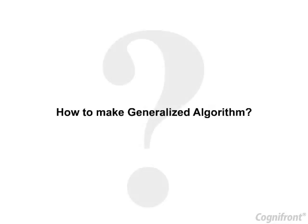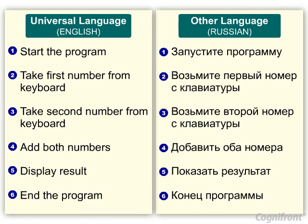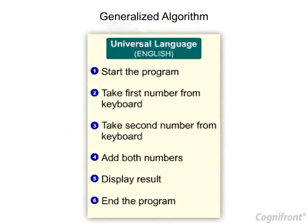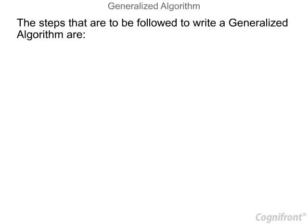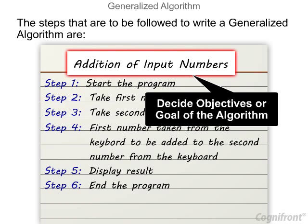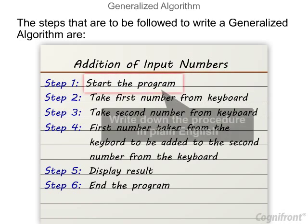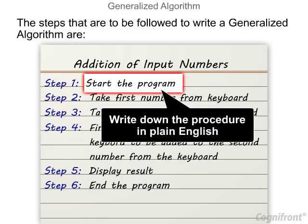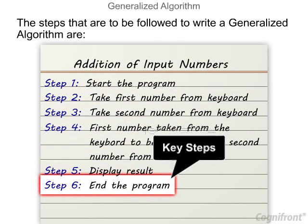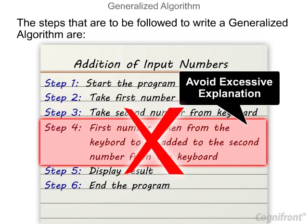Now let us study how to make a generalized algorithm. If we write an algorithm in a universal language, then it becomes very easy to understand. Such an algorithm is known as a generalized algorithm. The steps to write a generalized algorithm are: decide the objectives or goal of the algorithm, write down the procedure in plain English, break it down into key steps, and avoid excessive explanations.